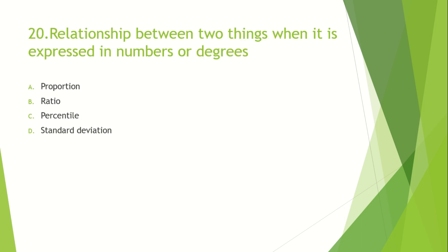The relationship between two things when expressed in numbers or degrees: Option A: Proportion. Option B: Ratio. Option C: Percentage. Option D: Standard deviation. The answer is Proportion.